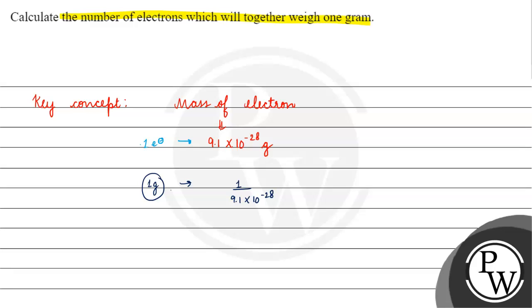This will be equals to 1.098 into 10 to the power 27 electrons.